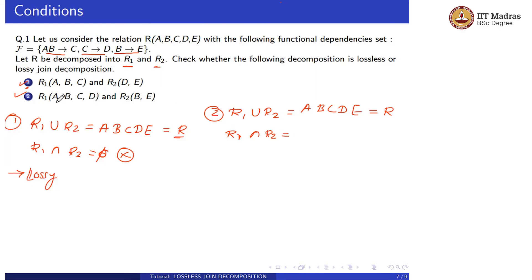R1 intersection R2 is B, which is not equal to the empty set.